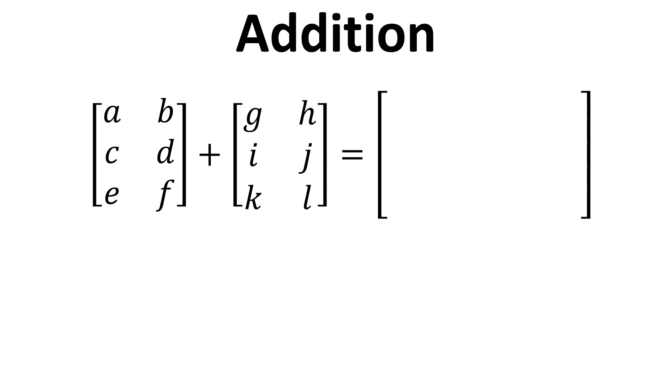In terms of addition, we can add two matrices if they're the same size, and what we simply do is add up the elements that are in the same position. So for the first one it's just A plus G, then B plus H, C plus I, D plus J, and so on.